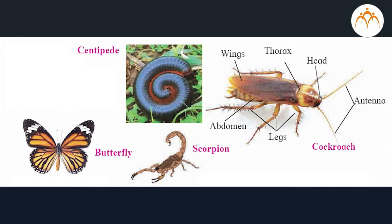Phylum Arthropoda: these animals have jointed appendages, hence they are called arthropods. Planet Earth has the highest number of animals from this phylum, hence this is the largest phylum with highly successful animals in the animal kingdom. These animals are found in all types of habitats, ranging from the deepest oceans to the highest mountains.